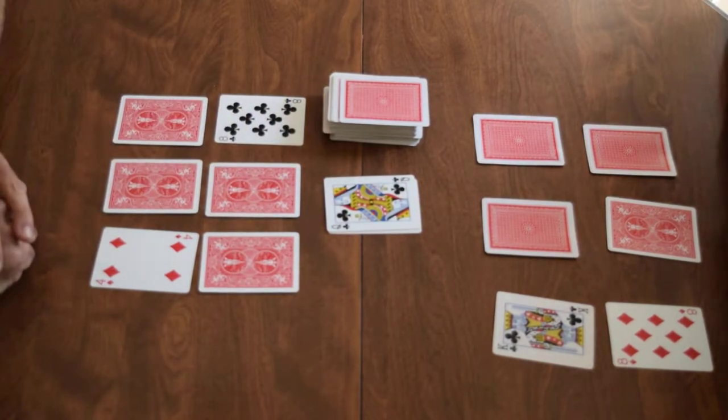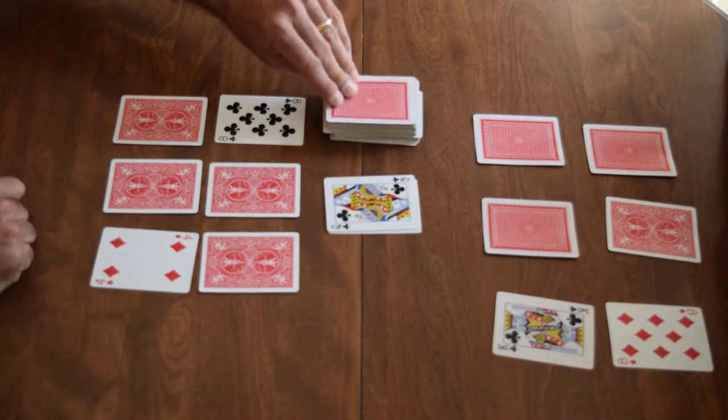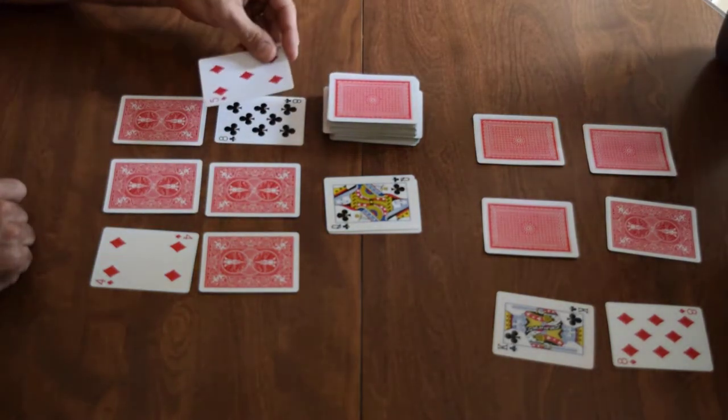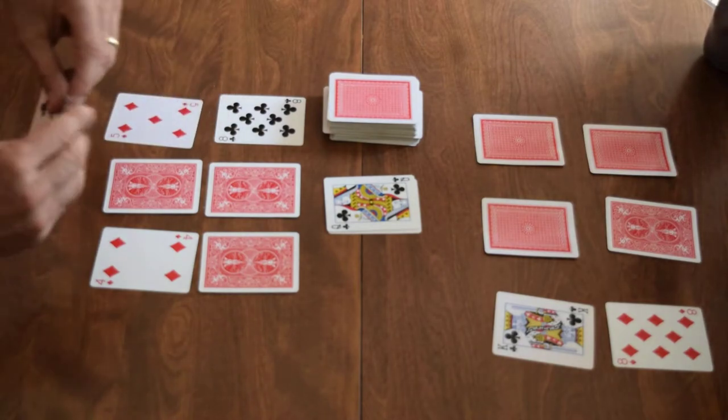Queens are always worth ten. Positive ten, you never want queens. I drew a five, that's fairly low, I'll take that and discard that.